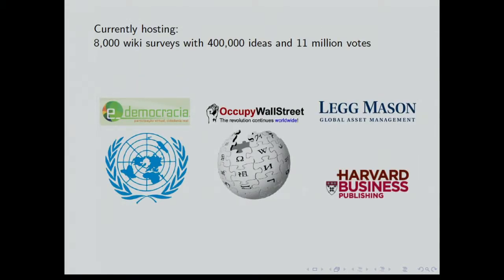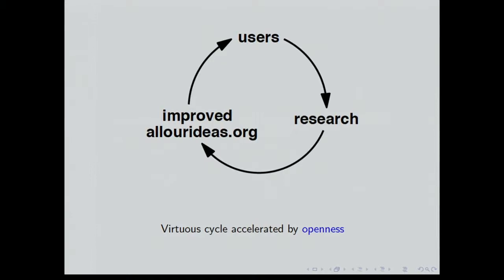We're currently hosting about 8,000 wiki surveys with about 11 million votes in total. It's been used some by governments. This is the project by the Brazilian House of Representatives. This is the UN, some social movements like Occupy Wall Street and Wikipedia, and then some companies as well.